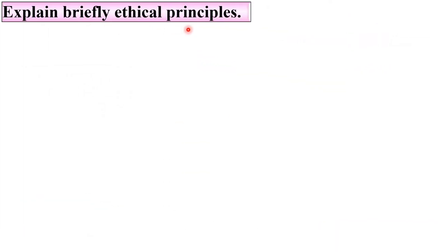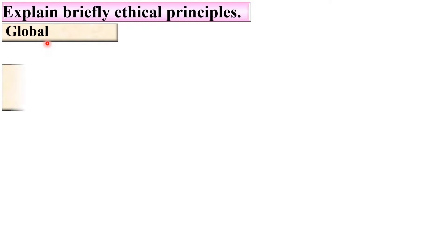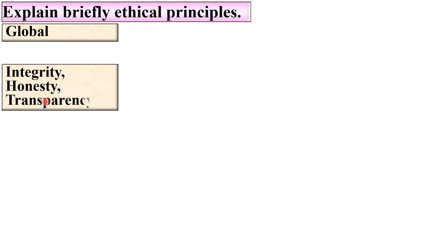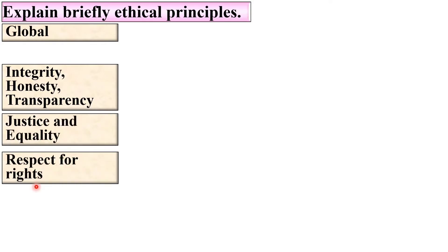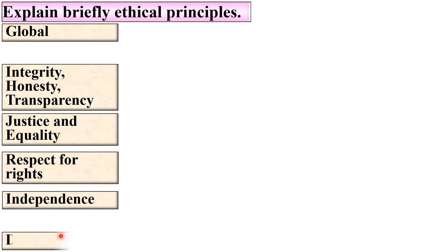First, let us briefly explain the ethical principles. The ethical principles point-wise are: integrity, honesty and transparency; justice and equality; respect for rights; independence; and diversity. These are the different ethical principles.